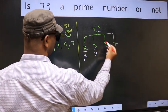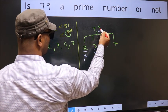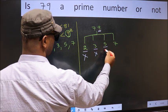Next, number 5. Last digit is neither 0 nor 5, so this is not divisible by 5.